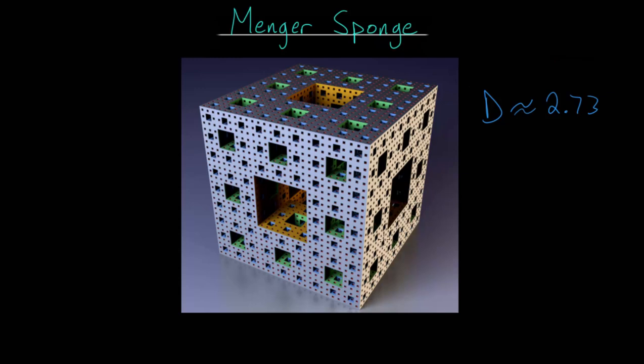You might notice that this shape is essentially the extension of the Sierpinski carpet into space, where if you just focus on one of these faces, let's say this face right here, then you might notice that this is essentially just the Sierpinski carpet if we ignore the dimensions going backwards. The Menger sponge is essentially just that carpet extended into space.